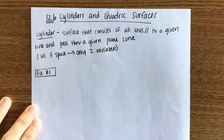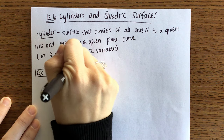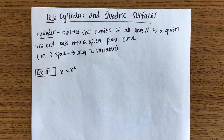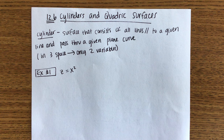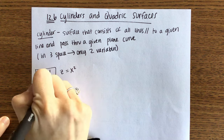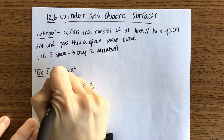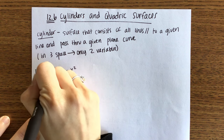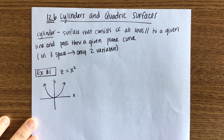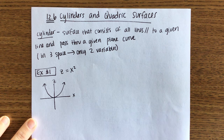For our first example, an example of a cylinder would be the equation z equals x squared. So this is three-space with only two variables. I suggested doing two-space first and then going to three-space. Here we are plotting x versus z — it's a parabola. Because y is not involved, when we move to three-space, we're going to be taking this parabola and moving it down the y-axis.